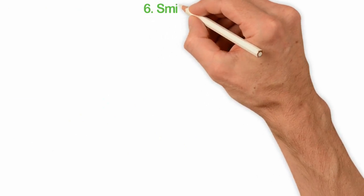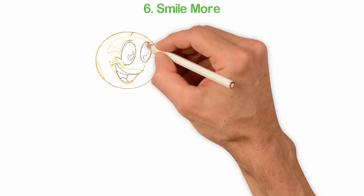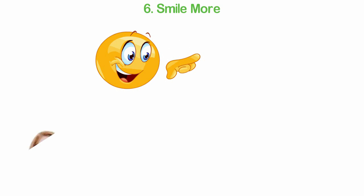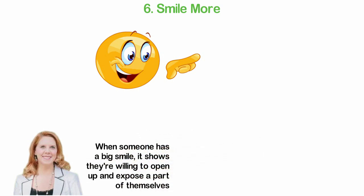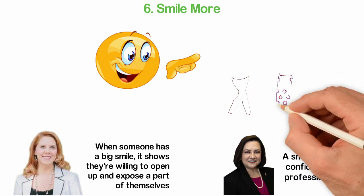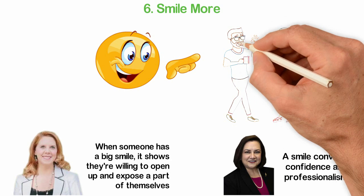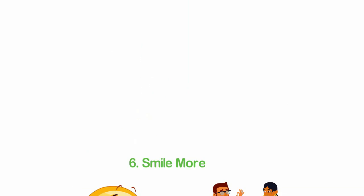Six: Smile more. When you smile, it shows that you are receptive and approachable, an attribute people always admire in others. According to Pamela MacLean, a past president of the American Academy of Periodontology, when someone has a big smile, it shows they're willing to open up and expose a part of themselves. A smile conveys confidence and professionalism. When you smile, you say a lot of positive things about yourself even without talking. This makes people enjoy being around you and enjoy spending time with you.